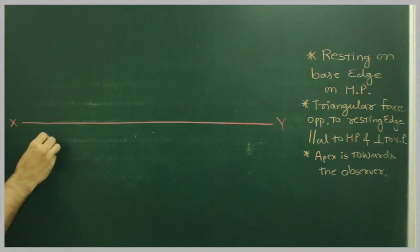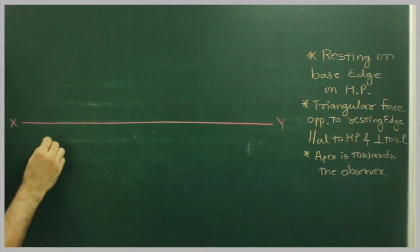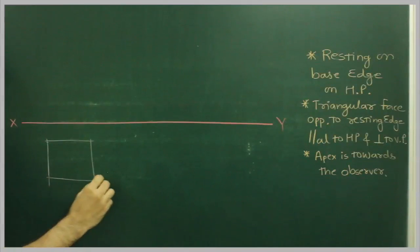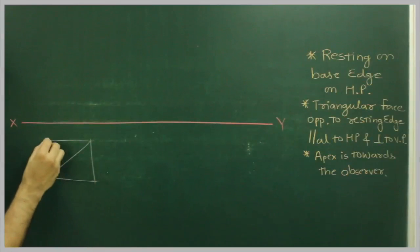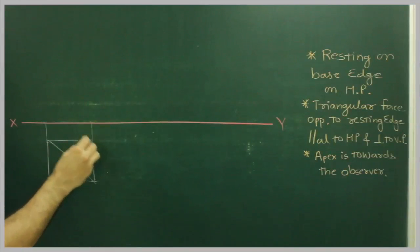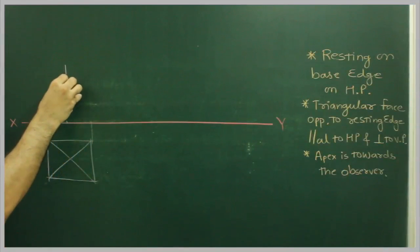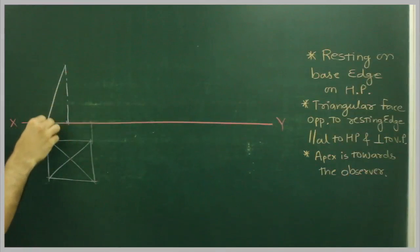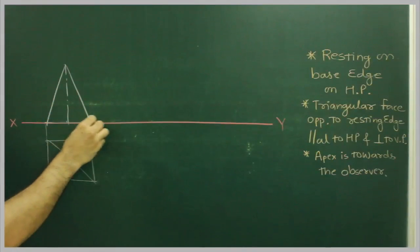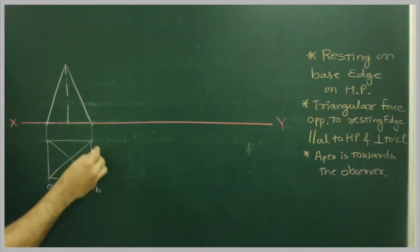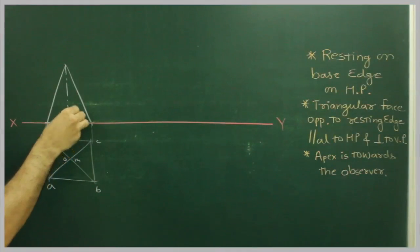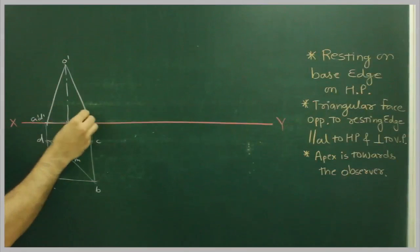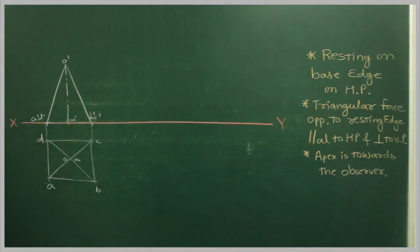First, we will draw a square in the top view. So first we draw a front view of a square pyramid, and it is resting on one of its base edges.